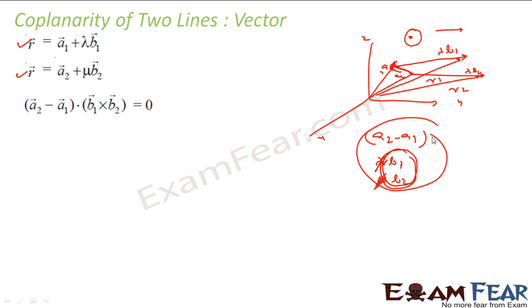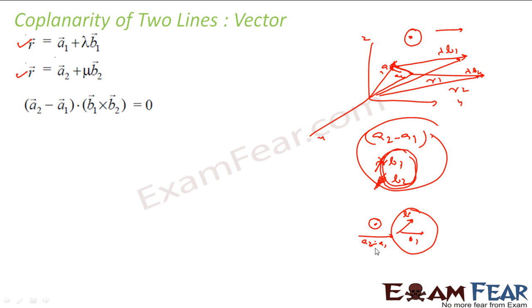And on that, I am doing a dot product with A2 minus A1, which has to be 0. If you see three lines in the same plane — let's suppose this is A2 minus A1, this is B1, this is B2 — you do a cross product of B1 and B2, you get something coming out of this plane, perpendicular to it. So the dot product of A2 minus A1 with that cross product equals 0. That is the explanation.